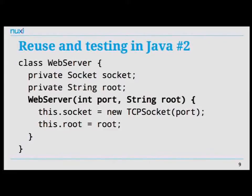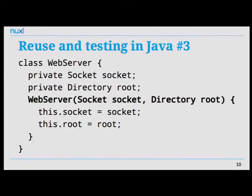The advantage of passing in the socket is that the web server now works with different network protocols — TCP, Unix socket, whatever. You could even have a virtual network socket not attached to a physical network for testing, like a mock socket. The same holds for file system access — instead of literally opening files inside the web server class, you pass in a directory object with member functions like get_file_contents. You can then test this web server completely from within Java code with no interaction with the actual operating system.